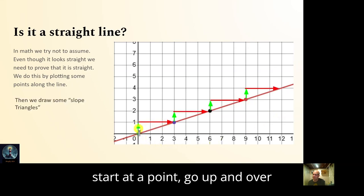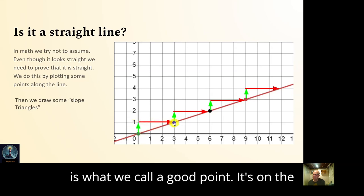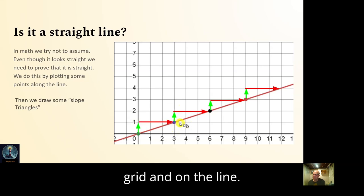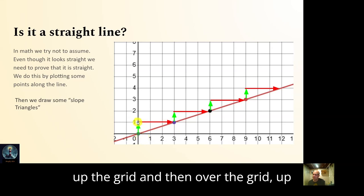Starting at a point, go up and over following the grid. Each point is what we call a good point — it's on the grid and on the line. So we take a point and go up the grid and then over the grid.